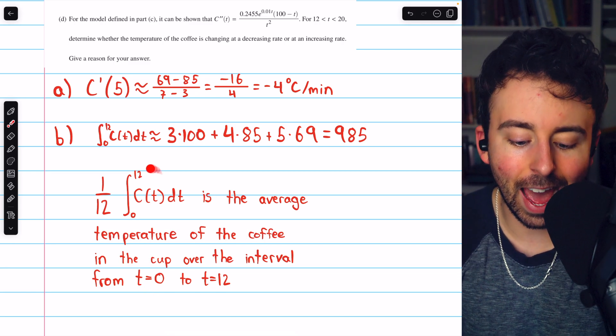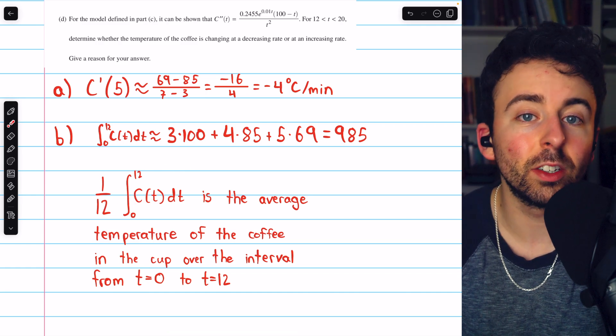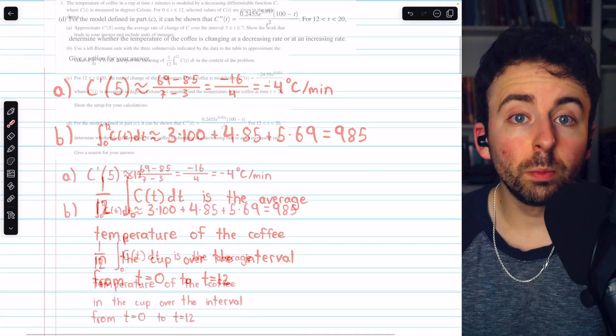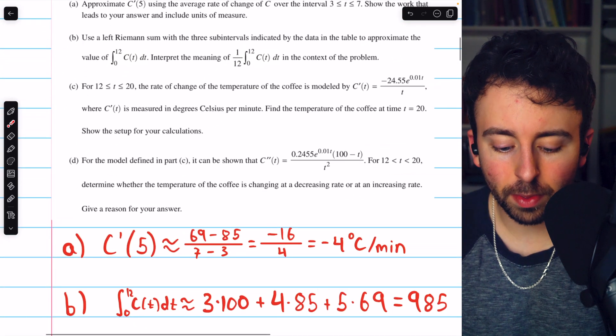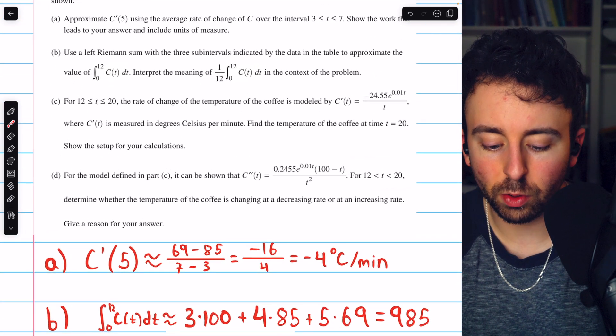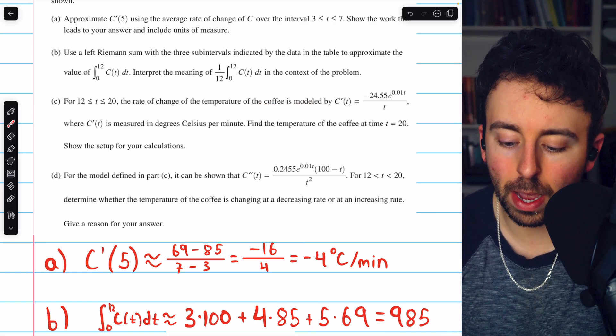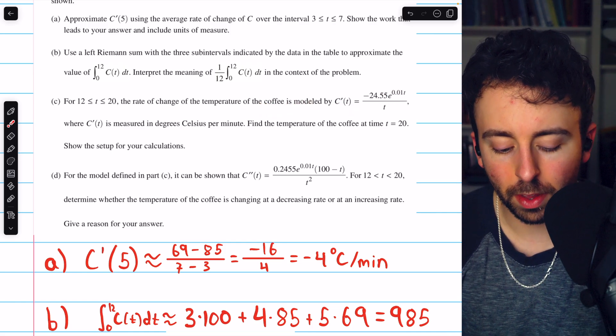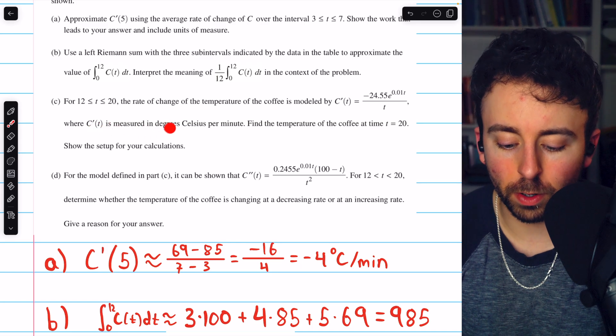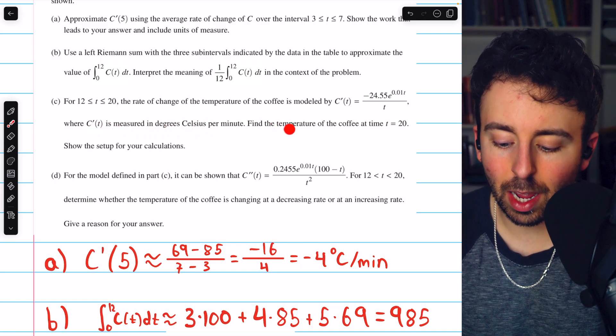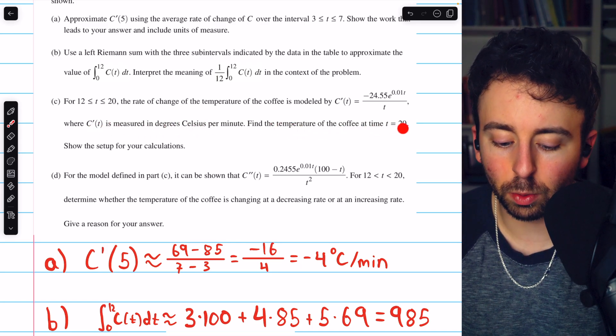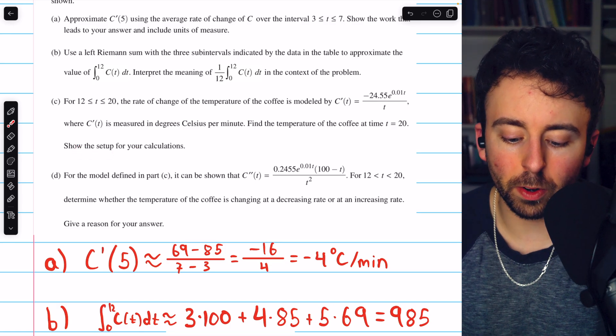Again, it's like adding up all the temperatures and then dividing by 12, the length of time. Moving on then to part c. For t between 12 and 20, the rate of change of the temperature of the coffee is modeled by c prime of t equals this expression, where c prime of t is measured in degrees Celsius per minute. Find the temperature of the coffee at time t equals 20 and show the setup for your calculations.